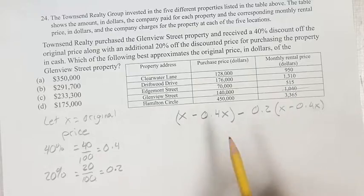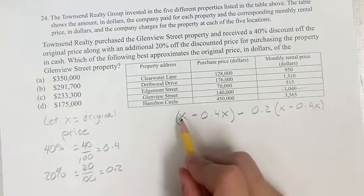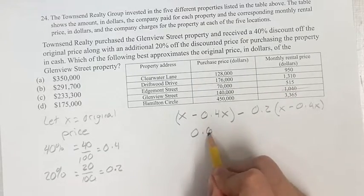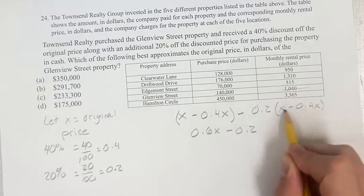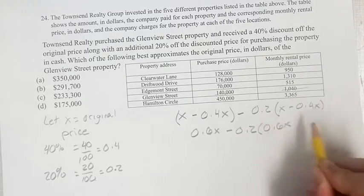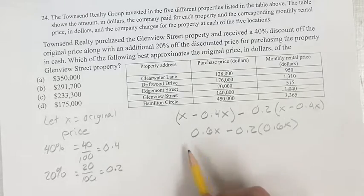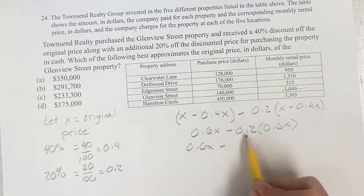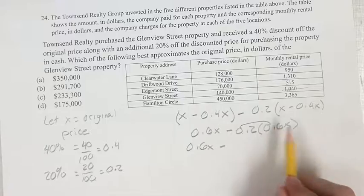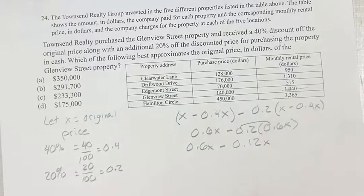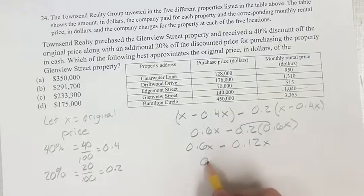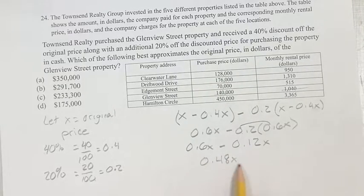So what is x minus 0.4x? That's 1 minus 0.4, which is 0.6x, minus 0.2 times the same thing, 0.6x. So we have 0.6x minus 0.2 times 0.6, which is 0.12x. And 0.6 minus 0.12 is 0.48x. This is our final price.